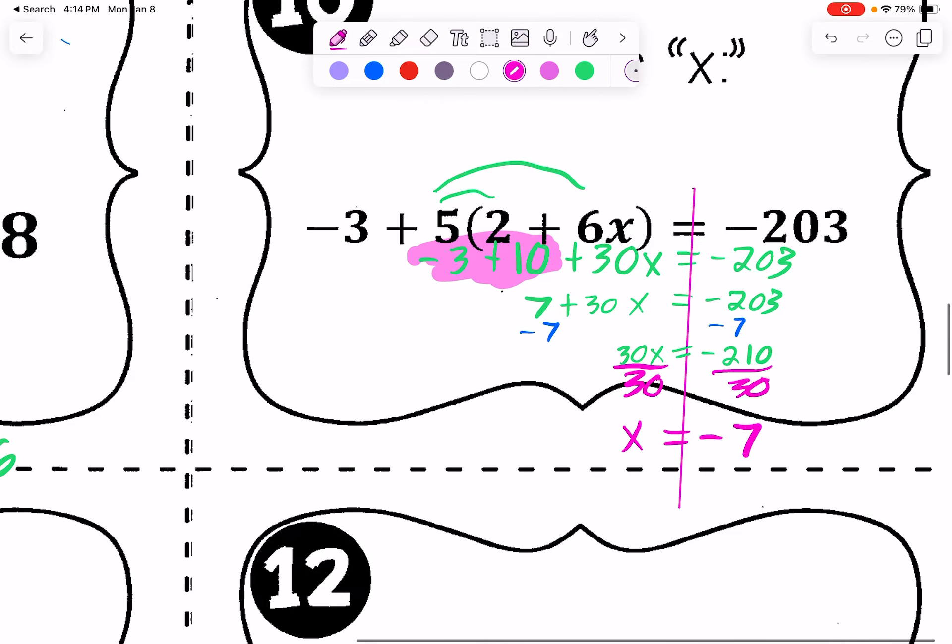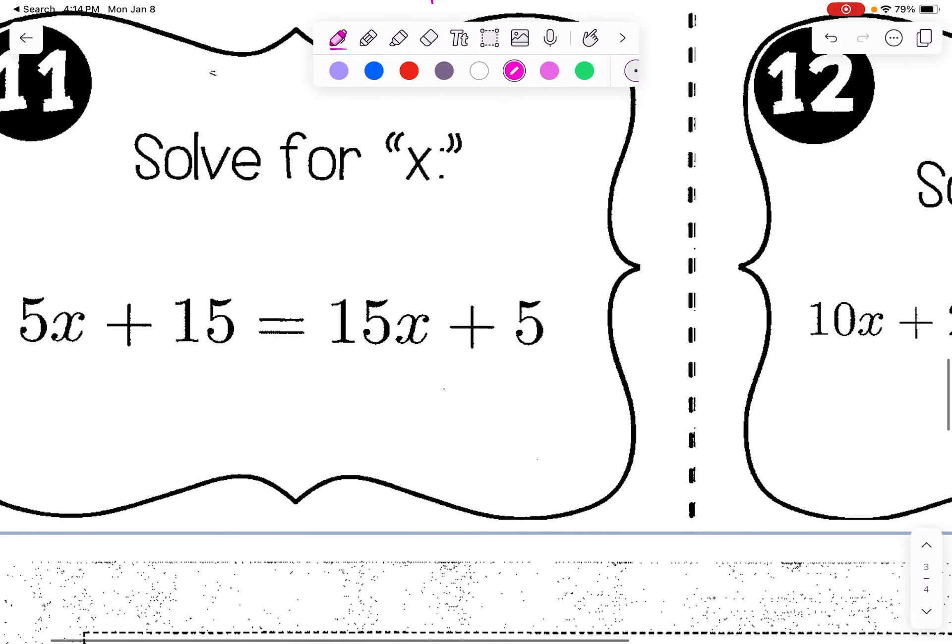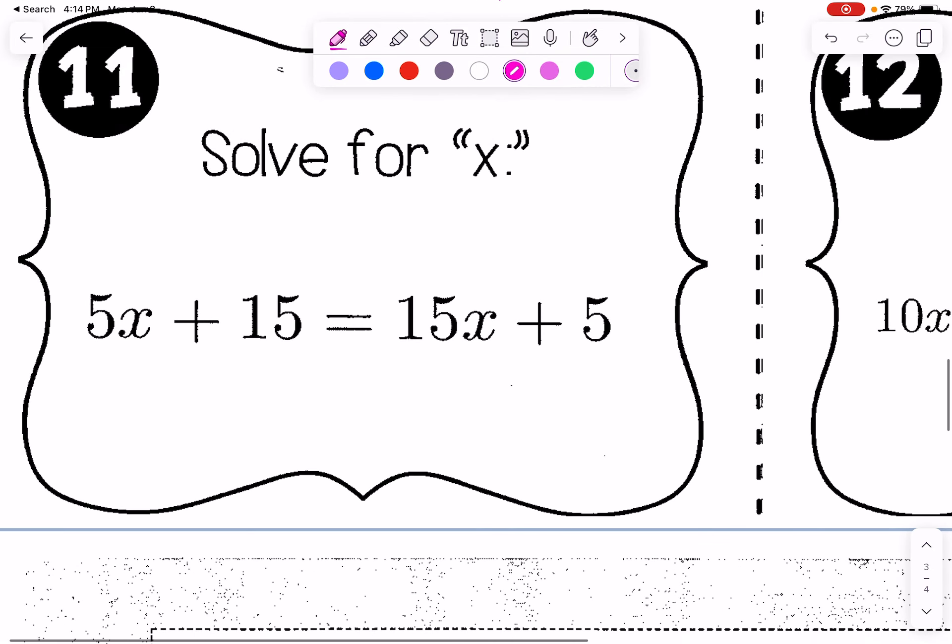So these are getting a little more complicated, but I think you can totally still handle them with the skills we've been working on. So this one's a little different. We have like terms that are on opposite sides. So remember, for ones like this, we still check for the distributive property. The distributive property can't be done. We check to see if there are any like terms we can combine. No like terms that are on the same side of the equal sign at this point. So we will try to get all the variables to one side.